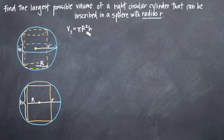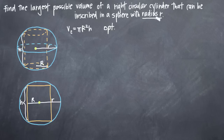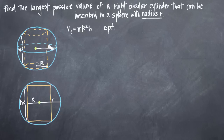The optimization equation is the equation we're trying to optimize — minimize or maximize. Since we were asked to find the largest possible volume, our optimization equation has to be an equation for volume, so this volume equation will be our optimization equation. We also need a constraint equation — the equation that limits us. We're trying to maximize the volume within the constraint that the radius of the sphere must be r, the only condition we've been given.